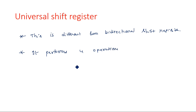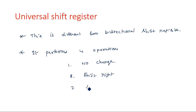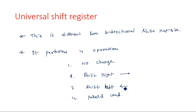The universal shift register performs four operations. The first one is no change operation — the data will be loaded again the same, the output will be taken as input. The second one is shift right operation. The third is shift left operation. And the fourth one is parallel load operation — whatever the input is there, that will be parallelly loaded.